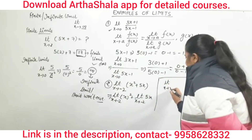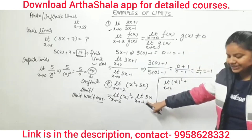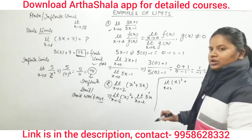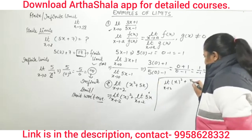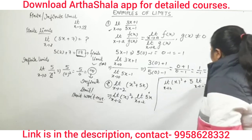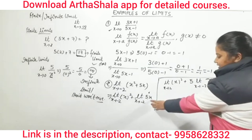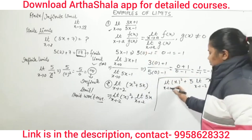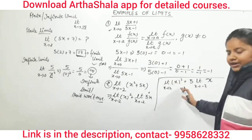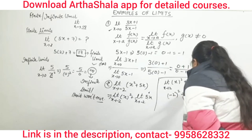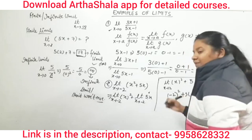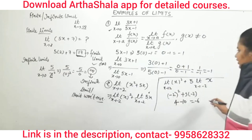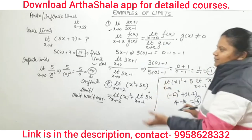As I explained about the constant rule — any constant comes outside the limit. Here 5 is our constant, so it comes out: limit x→−2 of x² plus 5 · limit x→−2 of x. Now we substitute x = −2: (−2)² + 5·(−2) = 4 + (−10) = −6. So our answer for the second example is −6.